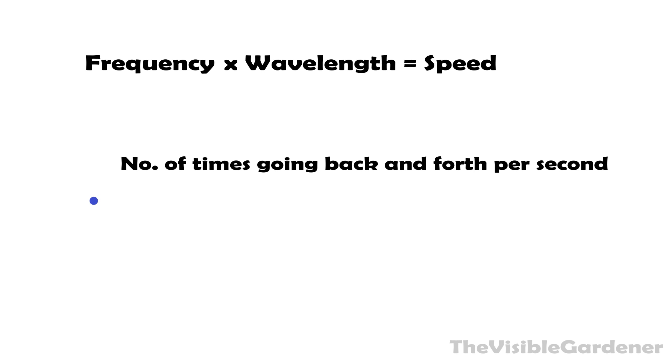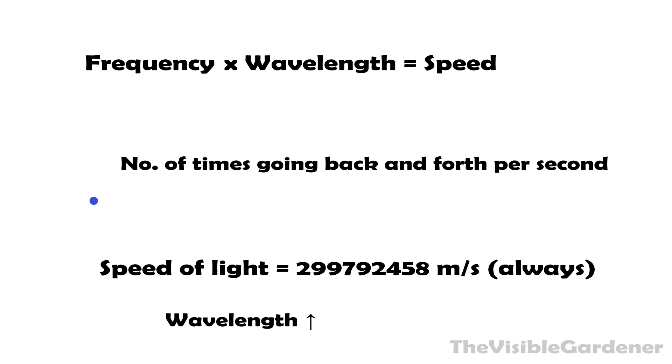There is also something called frequency, which is the number of times the wave jiggles in a second. Multiplied by the wavelength, it gives the speed of the wave. The speed of light is a universal constant, which means the more the wavelength, the less the frequency.